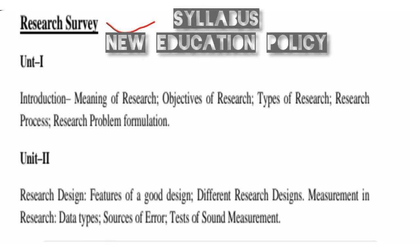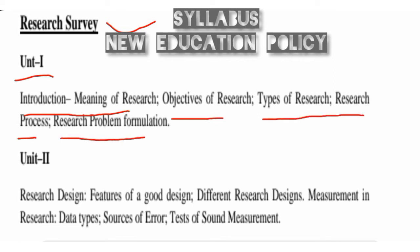Research survey syllabus of BSc Vocational subject. Unit 1: Introduction — meaning of research, objectives of research, types of research, research process, research problem formulation. Unit 2: Research design — features of a good design, different research designs, measurement in research, data types.